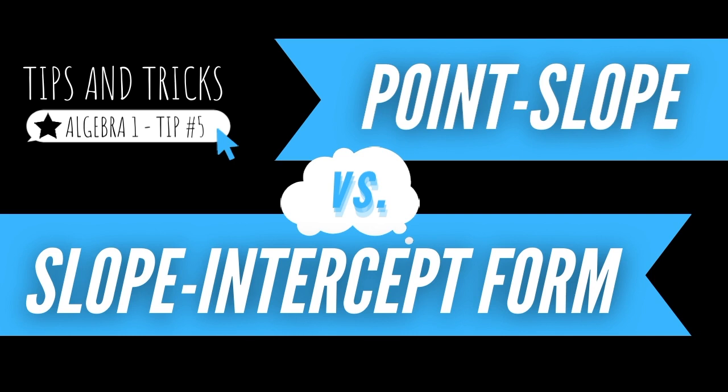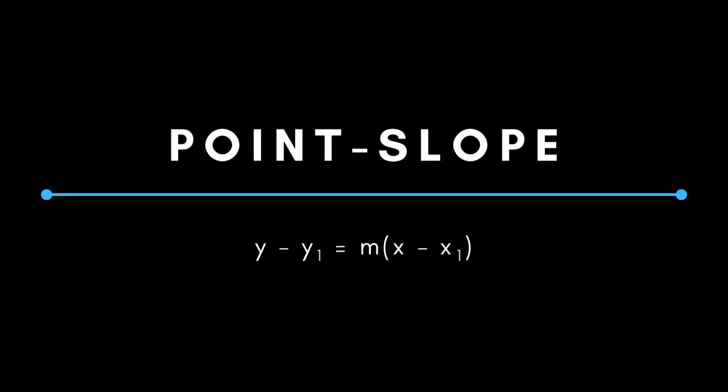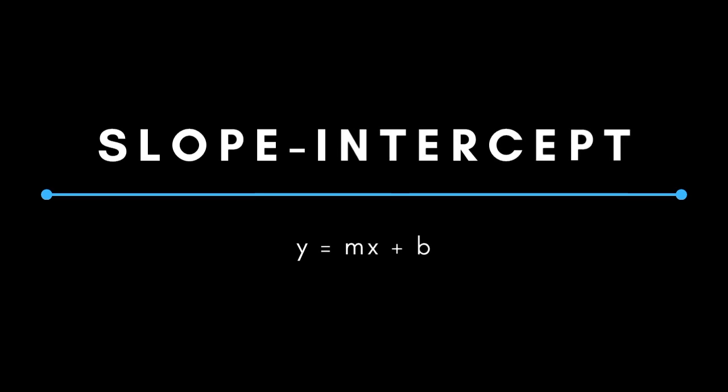If you remember correctly, point-slope form is y minus y₁ equals m times x minus x₁, while slope-intercept form is y equals mx plus b.